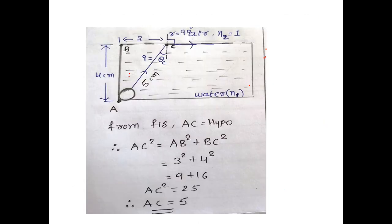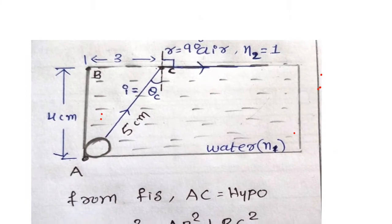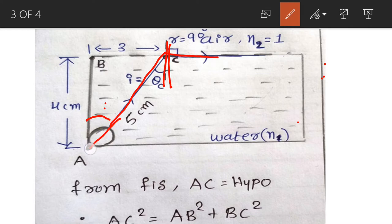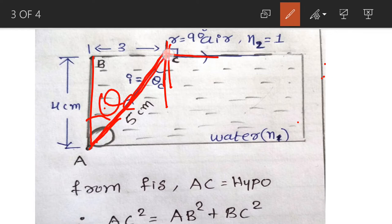Now if you observe here carefully, this angle right here is our theta c, that is the critical angle. This angle and this angle are alternate angles because they form a Z-like structure. So this angle is also the critical angle.